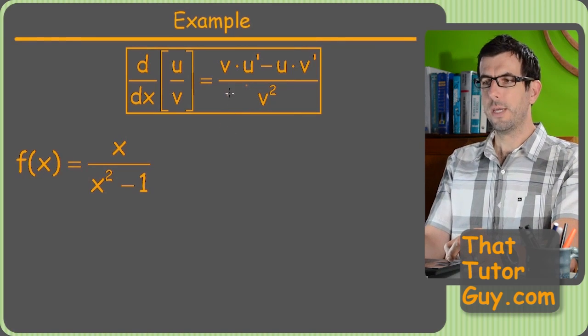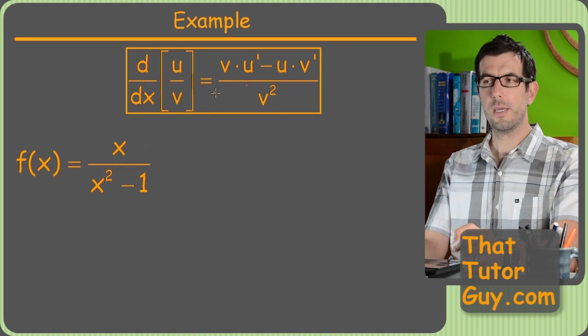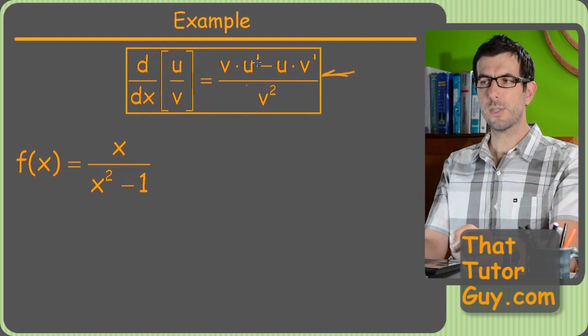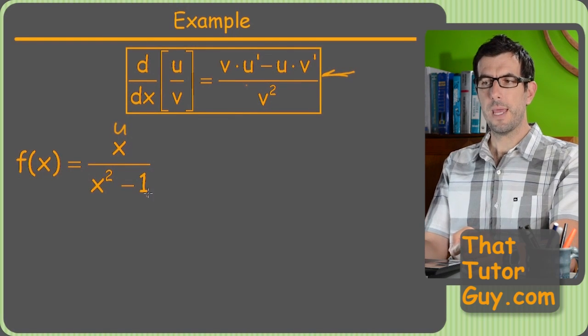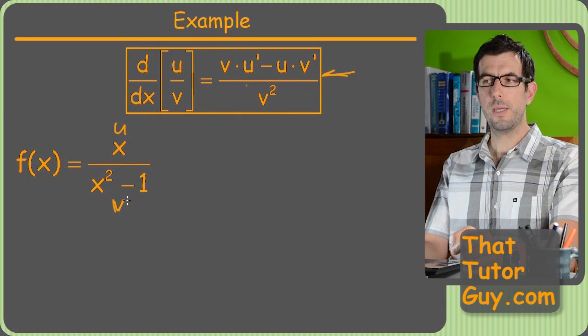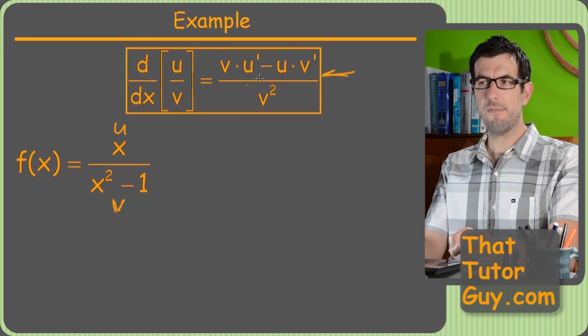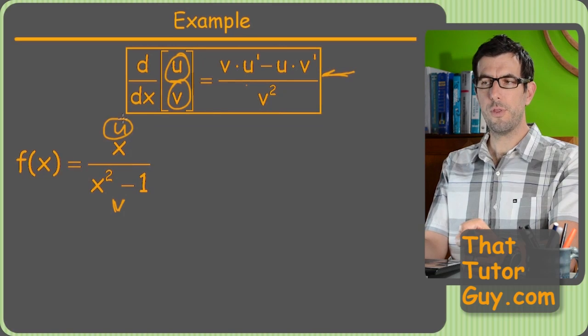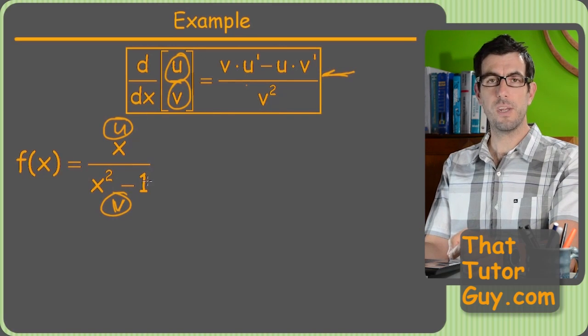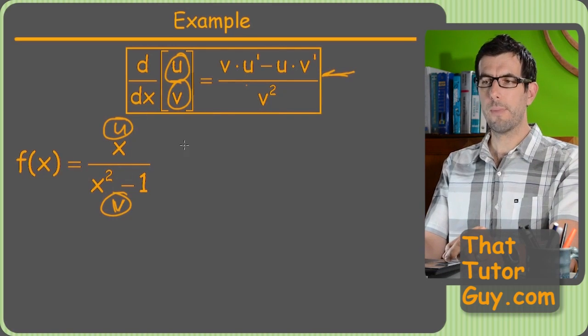So here we go. Now once again, just like with the product rule, we're going to label these u and v. So if you look at this quotient rule, you can see there's a lot of u's and v's and v primes and stuff. So I'm just going to label the top u and the bottom v. Now on this one, it really does matter because we have a minus sign and stuff. We really do have to label the numerator u and the denominator v, and it's not interchangeable. Order matters.